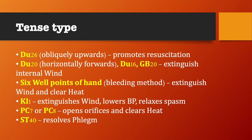Review of point uses in tense type: GV26 obliquely upwards promotes resuscitation. GV20 horizontally forwards. GV16 and GB20 extinguish internal wind. Six jingwell points of the hand using bleeding method extinguish wind and clear heat. Kidney 1 extinguishes wind, lowers blood pressure, relaxes spasm. PC7 or PC8 opens orifices and clears heat. Stomach 40 resolves phlegm.